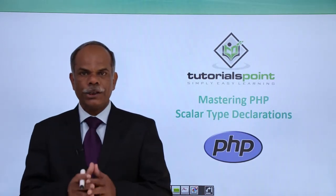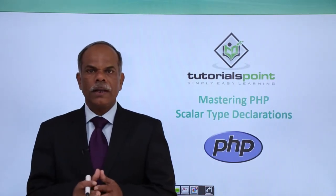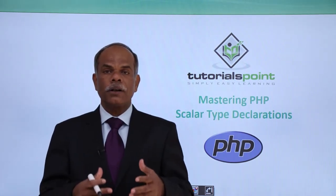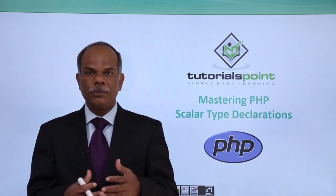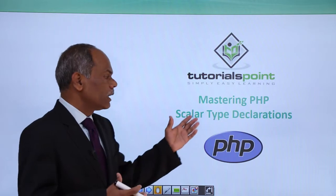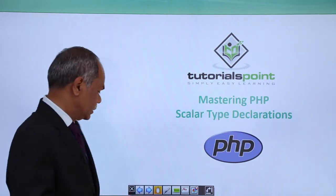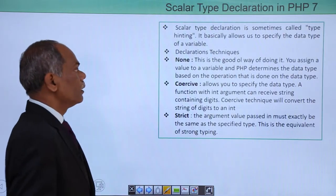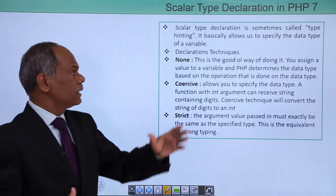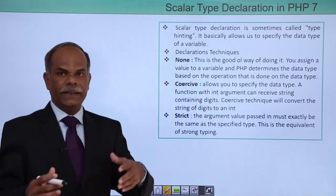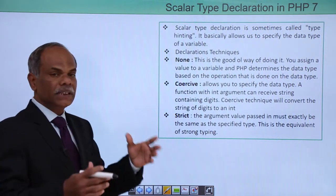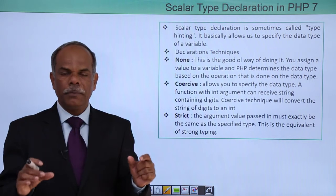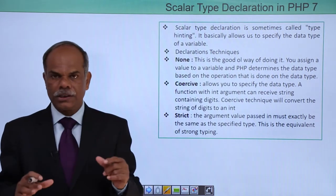In this video, let us see what is one of the new important features added into PHP 7, called scalar type declarations. Scalar type declaration is also called type hinting. It basically allows you to specify the data type of a variable, especially when you declare a function.